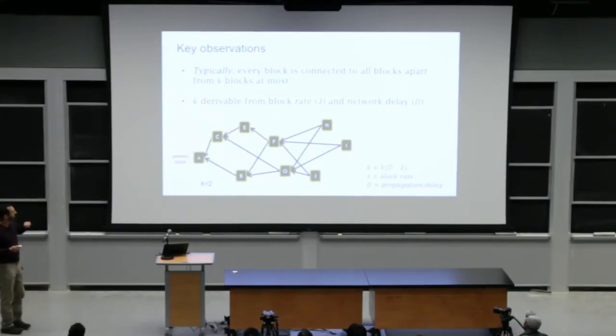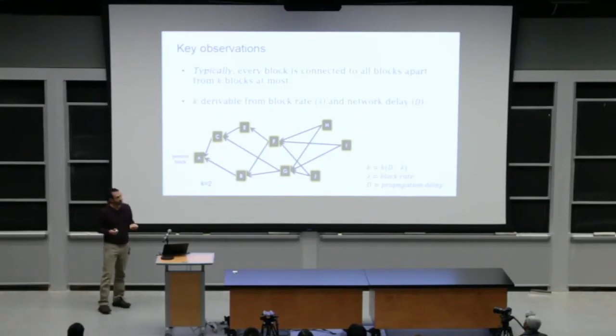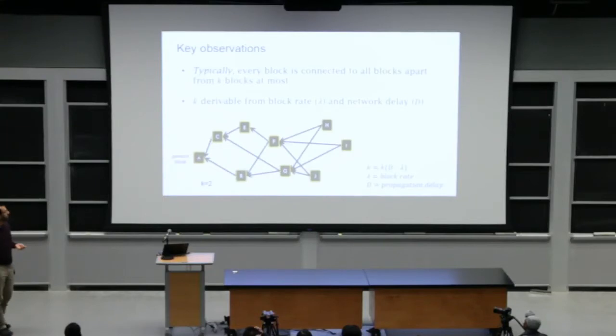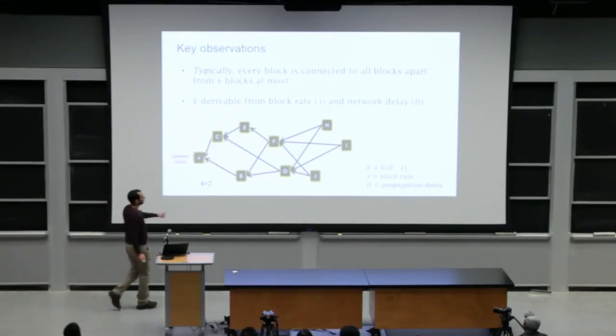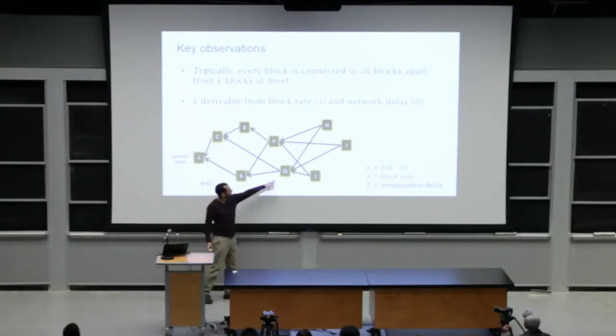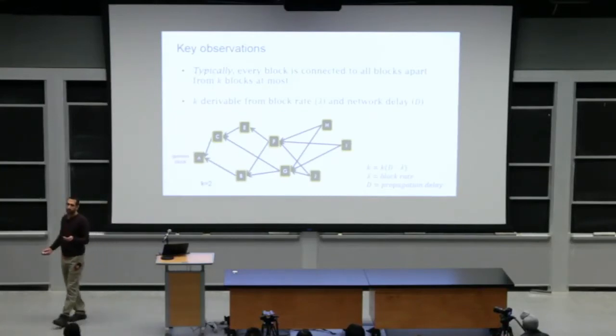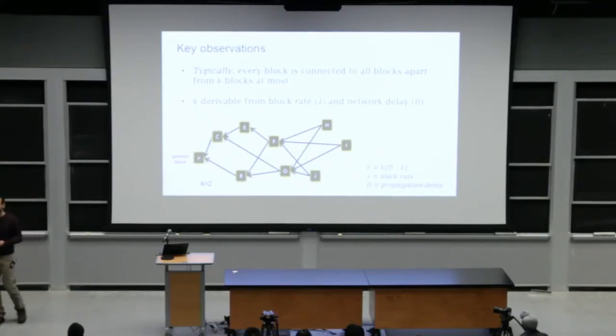He's connected either as an ancestor or as a descendant to all blocks, apart from block B and G, right? These two blocks B and G are not connected to block E, neither as descendants nor as ancestors, but for every honest block, there will be at the most K of these such blocks. Okay. It's can't, if you look only at the honest miners, the typical behavior of the system.